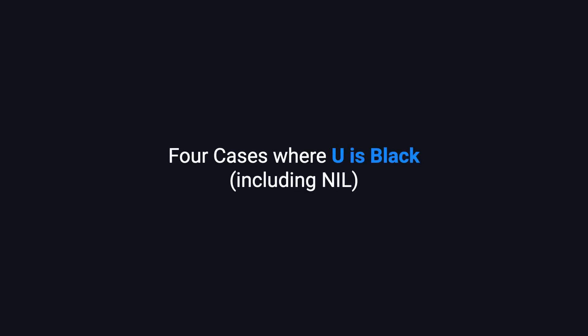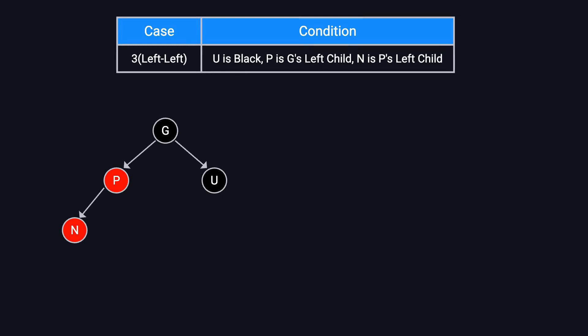Now, let's move on to the cases where U is black, which includes when U is a nil node. Case three. Also called left-left. In this case, U is black, P is G's left child,